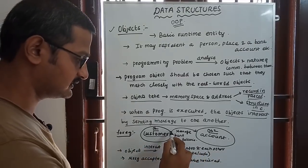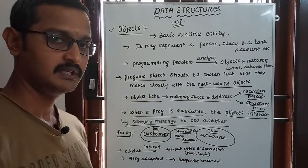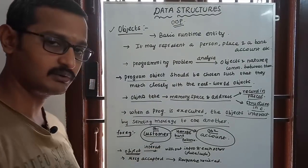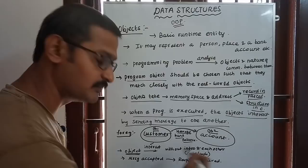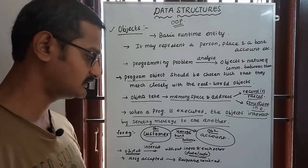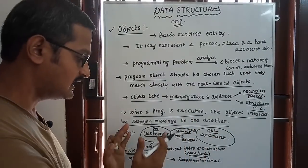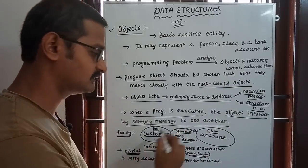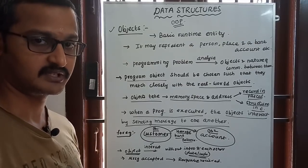These two objects in the program can send messages. For example, a customer can send a message to check bank balance. An object can interact with another object through messages, without knowing each other's internal data or code. Objects have their own data and code.